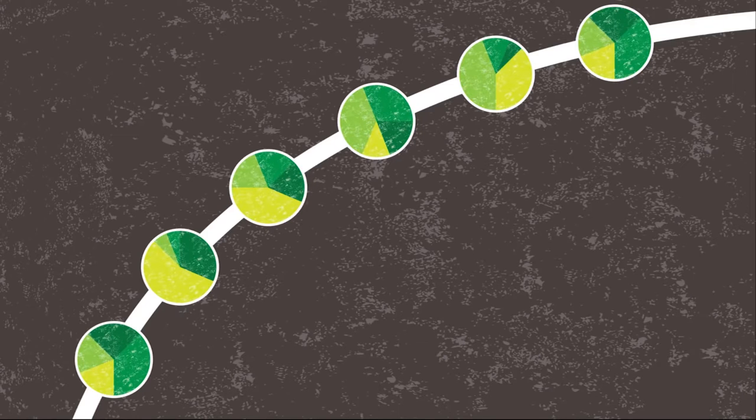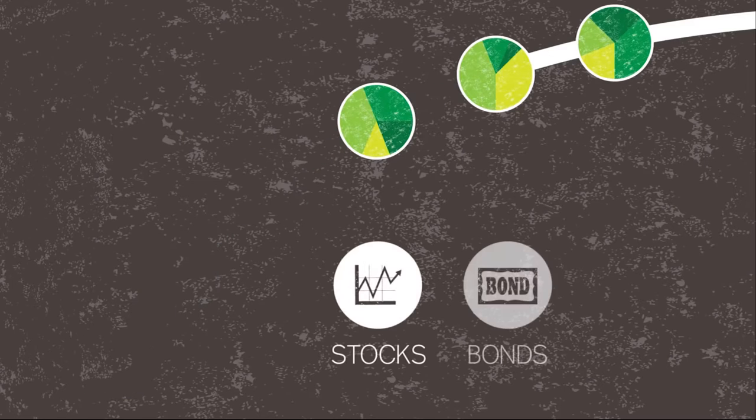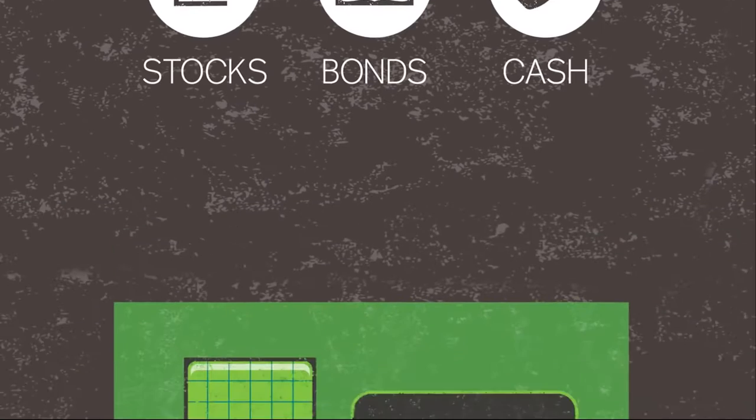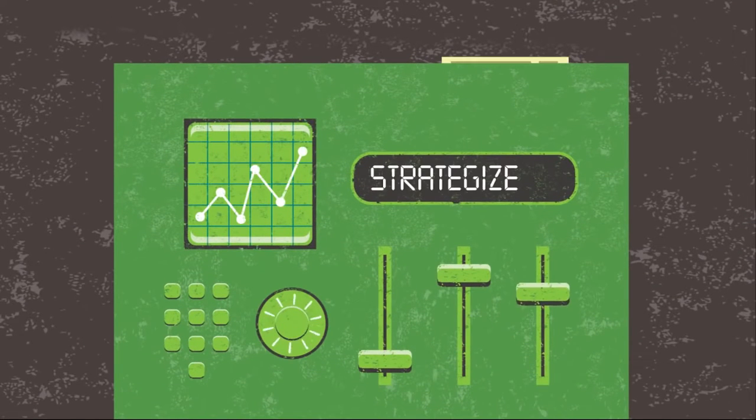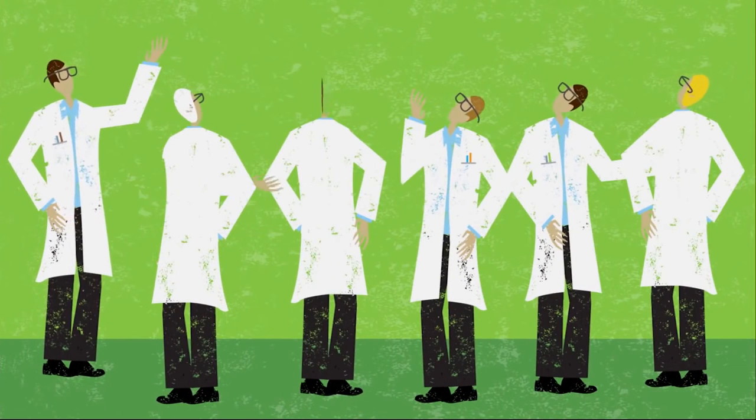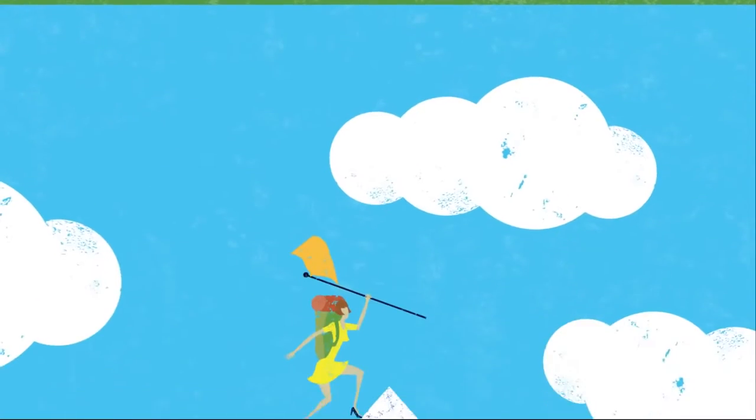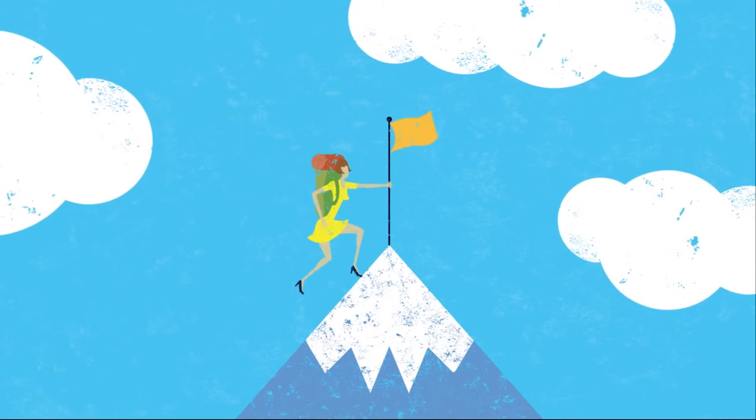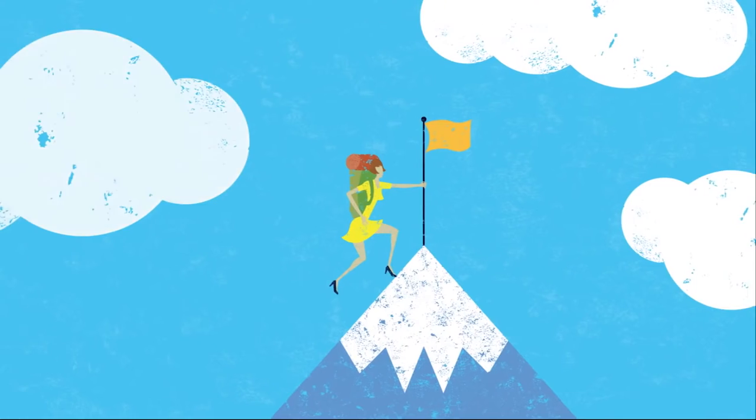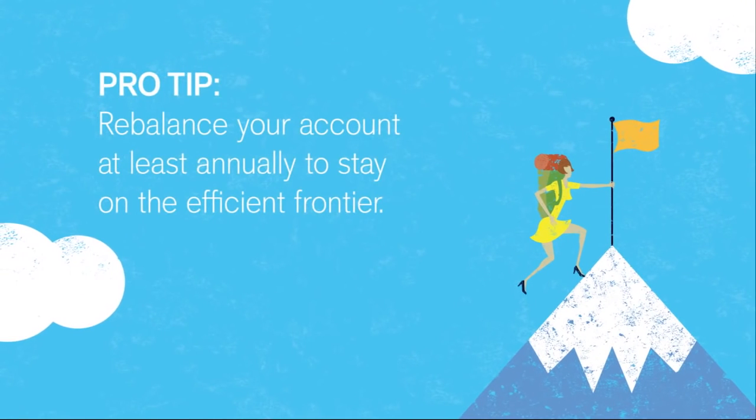Guided Choice can give you personalized advice recommending a specific mix of stocks, bonds, and cash to reach your retirement income goal. You can even use it to try different strategies and project the results. Whether you take the investment recommendation from our brainiacs, or choose to do it yourself, hopefully, now you are a little more confident about how retirement investing works. Just remember, if you do it yourself, you need to rebalance your account, at least annually, to stay on the efficient frontier.